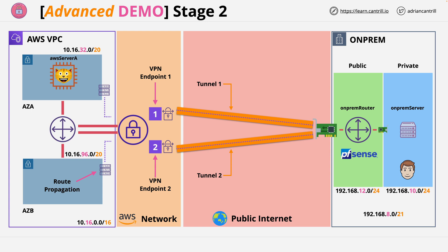Welcome back to stage two of this mini project. In this stage you're going to be configuring the simulated on-premises side of this architecture. You'll be configuring the PFSense router, and once you've finished you'll have two operational tunnels, one to each of the VPN endpoints within the AWS environment. This will ensure, at least from the AWS side, that this is a highly available solution.